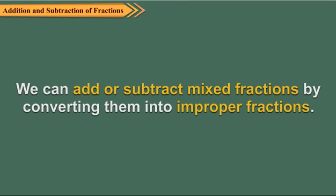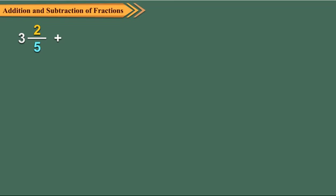We can add or subtract mixed fractions by converting them into improper fractions. Let us add 3, 2 upon 5 and 4, 3 upon 10.